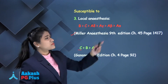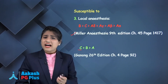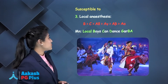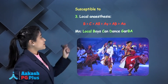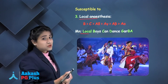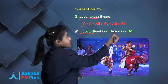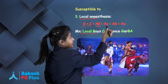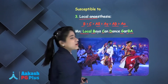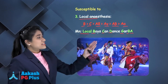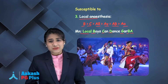To remember the local anesthetic susceptibility order — B, C, A-delta, A-gamma, A-beta, A-alpha — use the mnemonic: 'Local boys can dance garba.' Local = local anesthetic, Boys = B, Can = C, Dance = A-delta (D), Garba = A-gamma (G), and then A-beta and A-alpha follow.